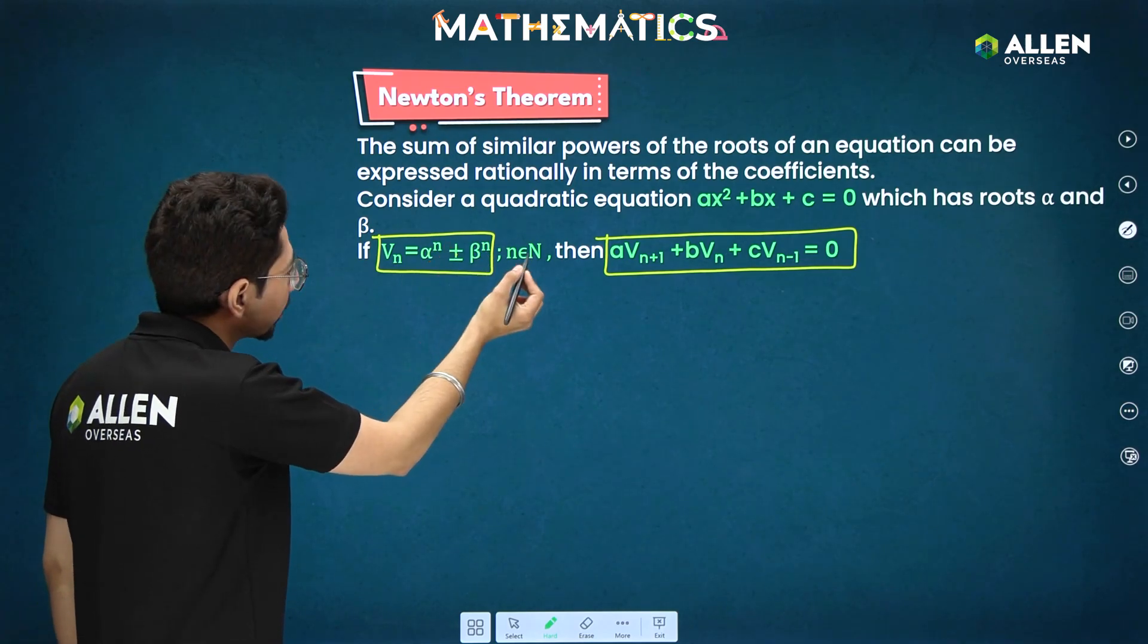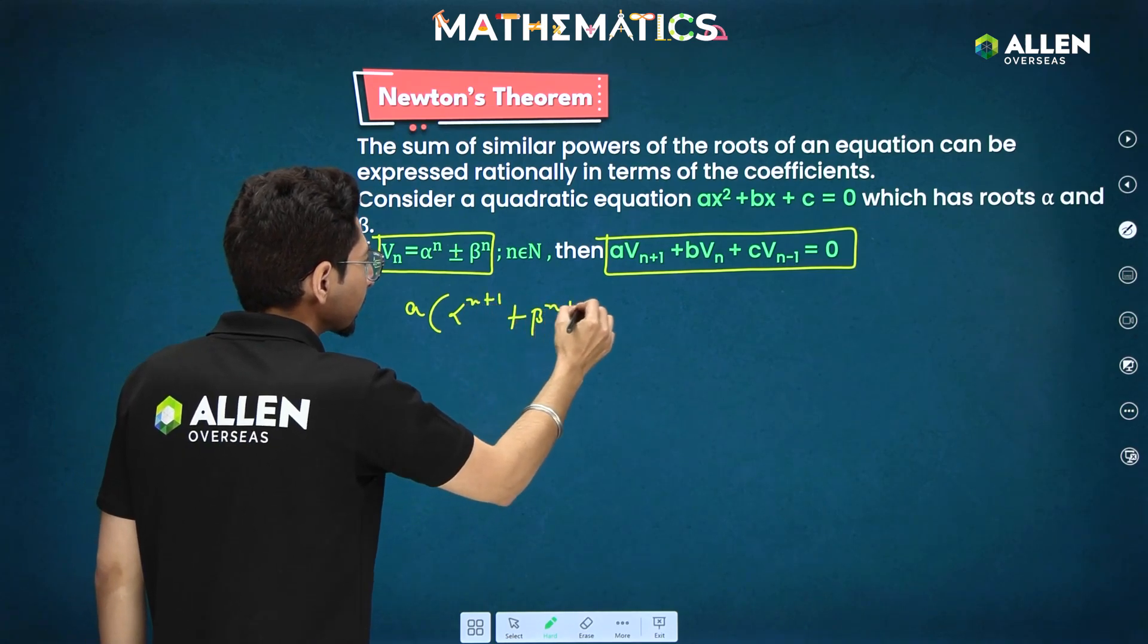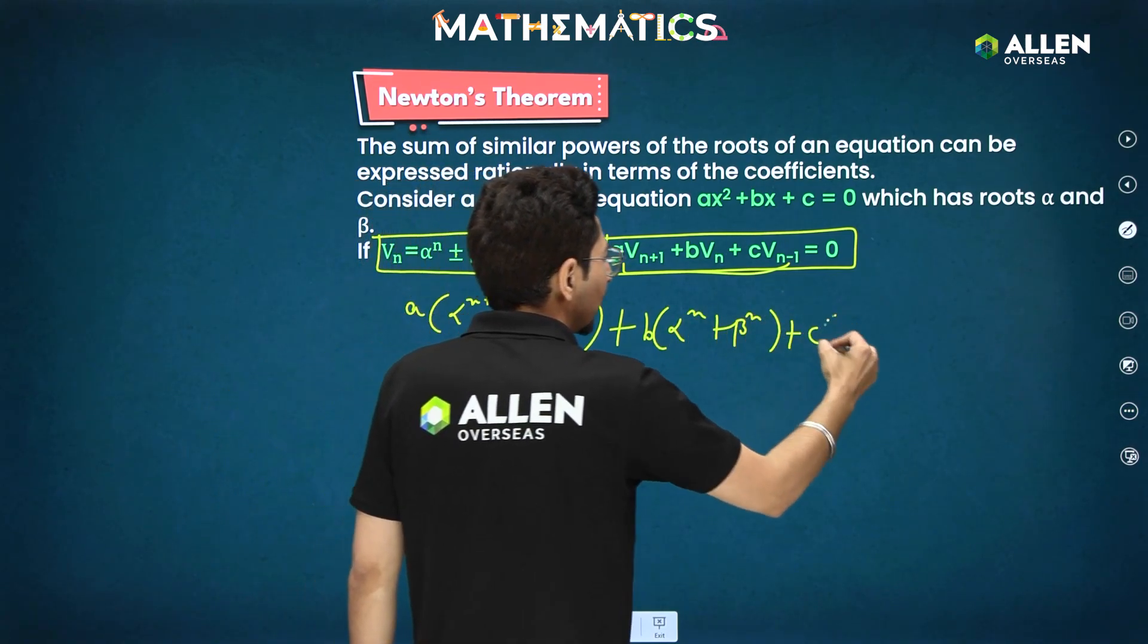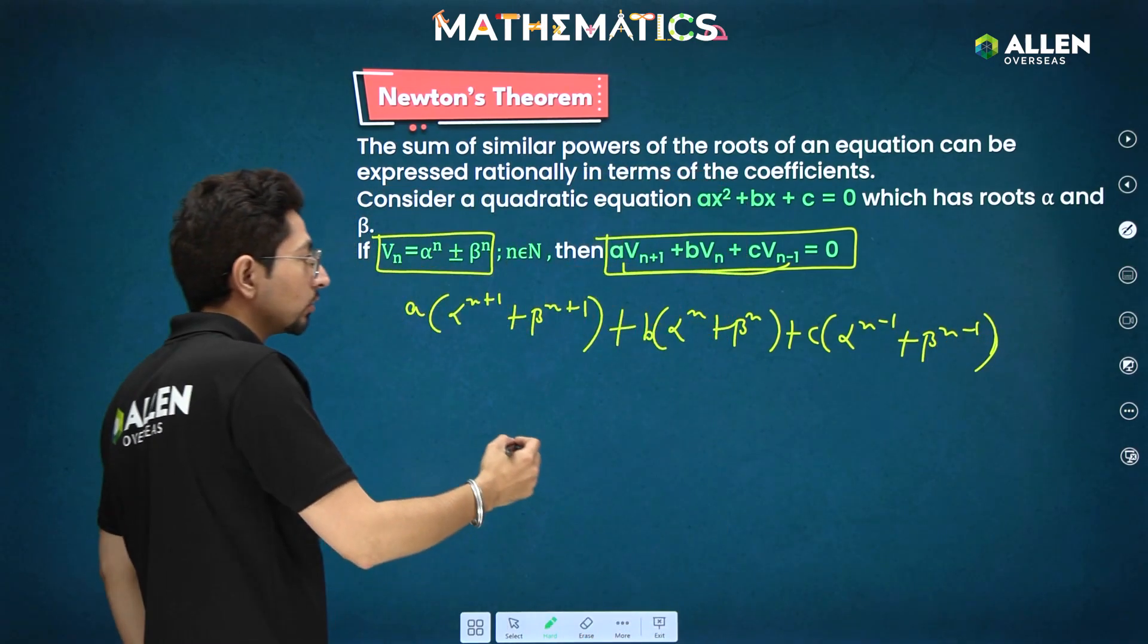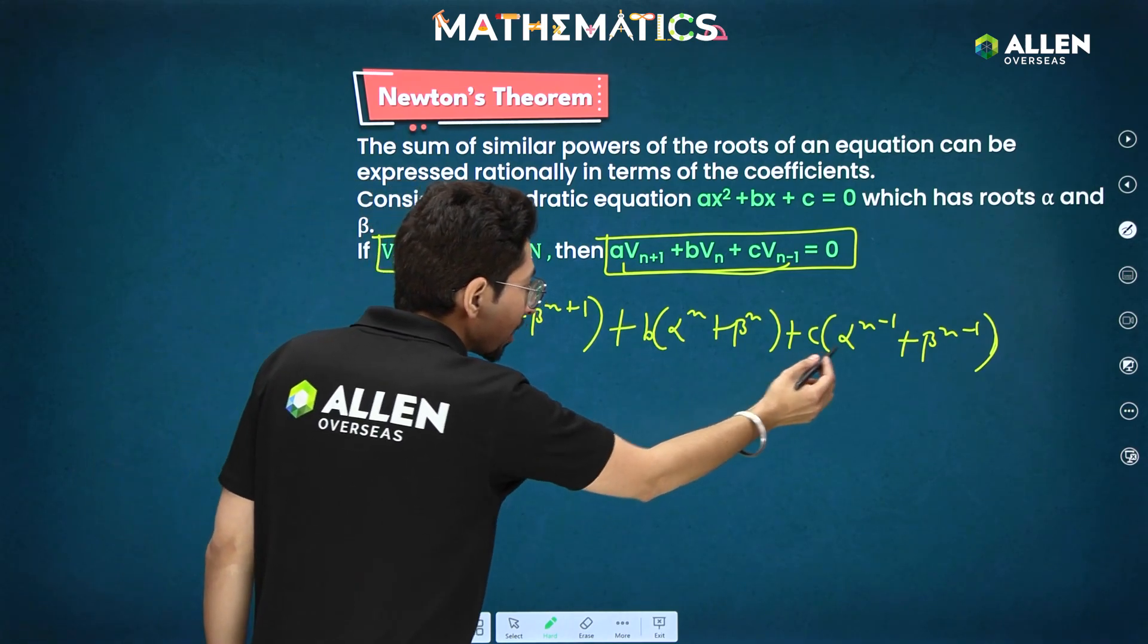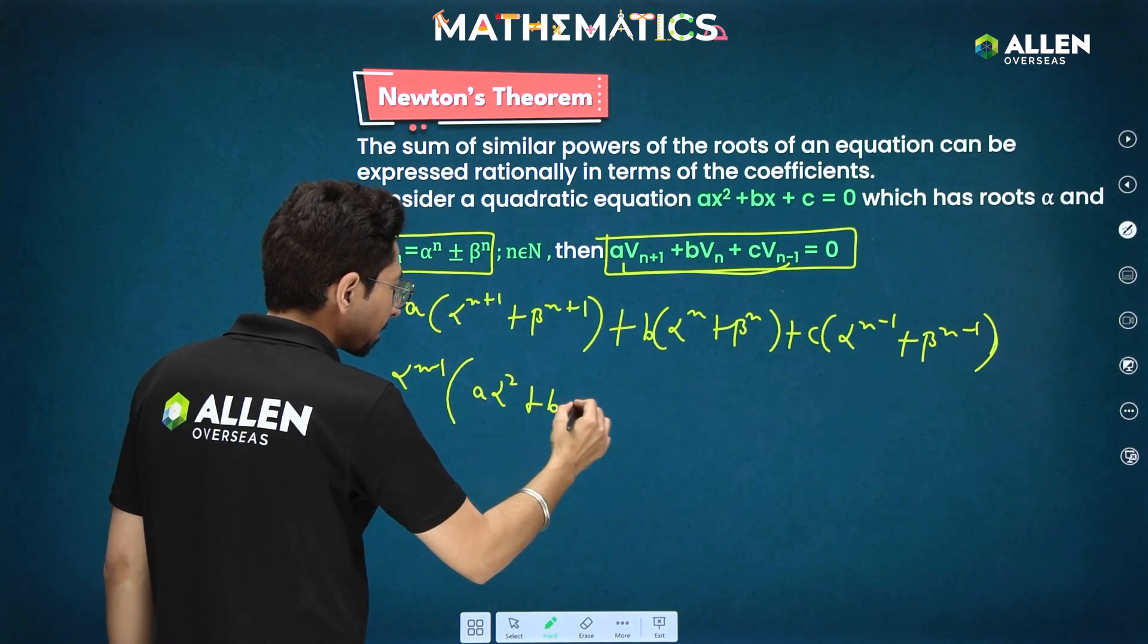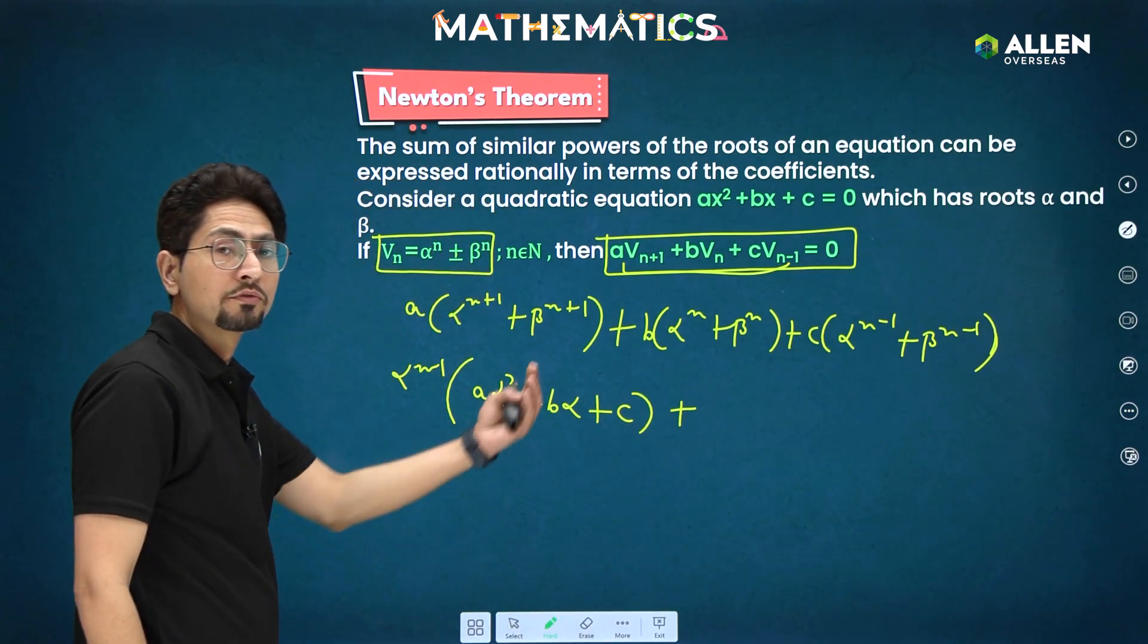So vn plus 1 will be alpha power n plus 1 plus beta power n plus 1 plus, talking about left hand side only, b into alpha power n plus beta power n plus c into alpha power n minus 1 plus beta power n minus 1. This is 0. This we have to prove 0. Now directly taking the coefficient of alpha, let's take alpha power n minus 1 common. What you will be getting for this? A alpha square plus b alpha plus c. So this part is all the coefficient of alpha here.